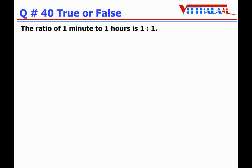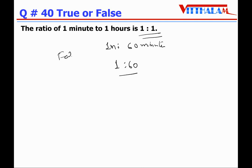Question 40: The ratio of one minute to one hour is 1:1 — False. One minute to one hour means 60 minutes. Therefore the ratio is 1:60, which is not equal to 1:1, therefore it is False.